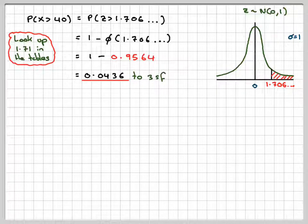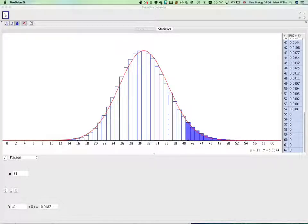However, if we go to the probability calculator in GeoGebra, we've set it up already, we've got Poisson, 31, more than or equal to 41, because we don't want to include 40 because there's more than 40, we get 0.0487.